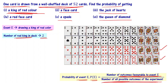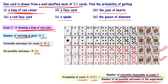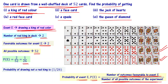Picking either of those two red king cards gives us a favorable outcome for this event. Total favorable outcomes are 2. Since there are two favorable outcomes and all possible outcomes are 52, the probability is 2 divided by 52, that is 1 by 26. So, the probability of drawing a red color king is 1 by 26.